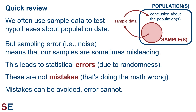But sampling error, also known as noise, means that sometimes our samples are misleading. If the mean of the population is 20, sometimes our samples will have a mean of 19. This sampling error leads to statistical errors when we make our conclusions about the population. If our sample was 19, we would make an error if we conclude that the population mean is 19.